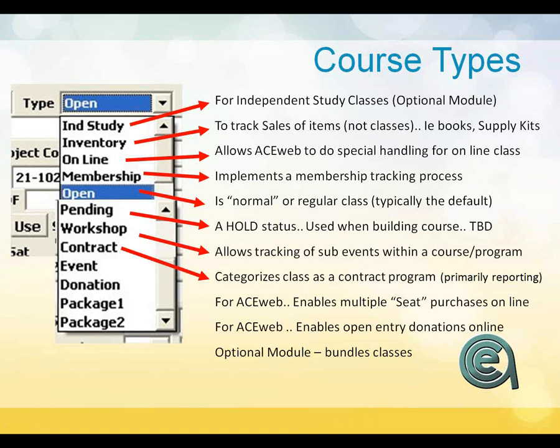Contract Course gives you a way to categorize your course for a contract program — typically an in-house, private program for a particular company, for those that do business-to-business private training. Workforce/Event: for AceWeb, you can always add a multiple seat purchase. Defining a class as an Event on AceWeb would allow students to purchase multiple tickets to a class.